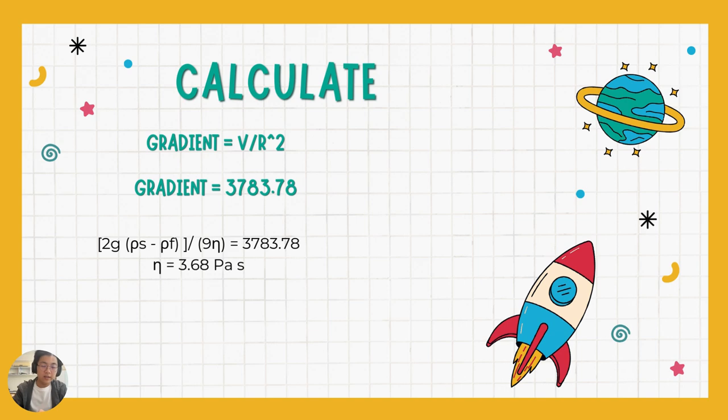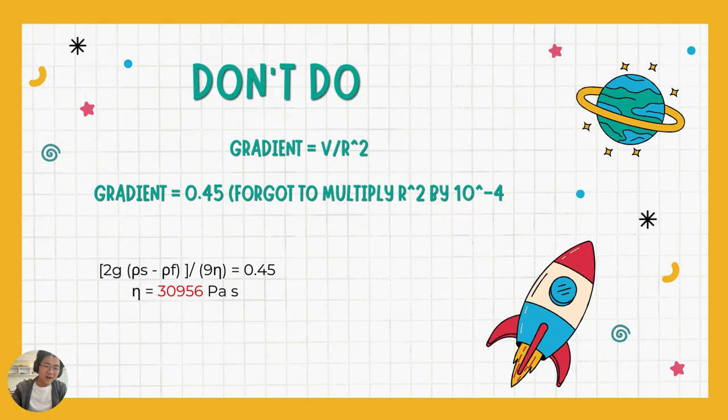All right. Calculating the viscosity, we know that the gradient is V over R², which we then get 3,783.78. This is the value we get when we remember 2 times 10 to the power of negative 4 for R². And so we can see that the viscosity of honey is around 3.68 in our experiment. But what if you forgot about that important thing? This is what's going to happen. When you forgot to multiply the radius squared by 10 to the power of negative 4, you get a gradient of 0.45, which results in your viscosity being 31,000 Pascal seconds. Imagine that in your head. Like the honey is like rock solid, maybe even more than rock solid. So by using the correct gradient, we have verified that Stokes' law works.